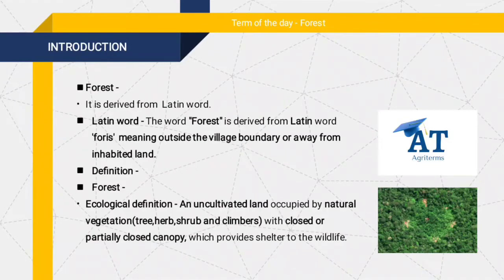Now, the ecological definition of forest: A forest may be defined as an uncultivated land occupied by natural vegetation. Natural vegetation includes trees, herbs, shrubs, and climbers, with a closed or partially closed canopy, which provides shelter to the wildlife.